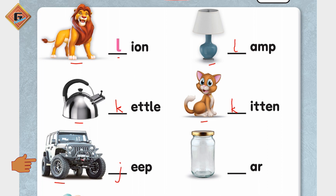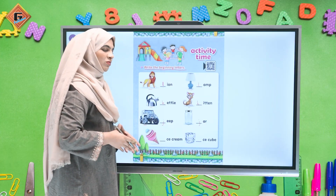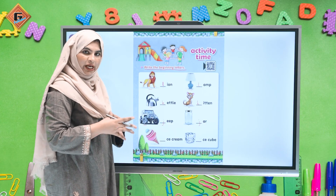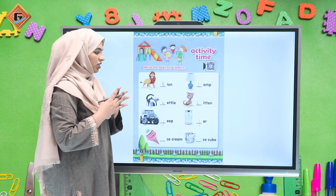Aage dekhenge — this is a jeep. Jeep ka beginning sound kya hai? 'J' — to iska matlab hai hum yahan J likhenge. Aur aage dekhenge, yeh hai ek jar. To jar bhi kis se start hota hai? J se start hota hai, to yahan pe bhi hum J likhenge.